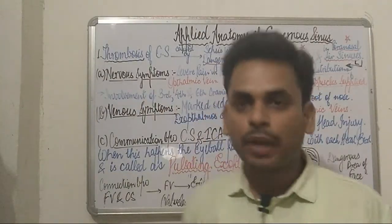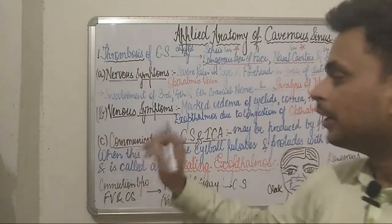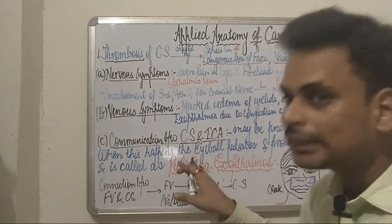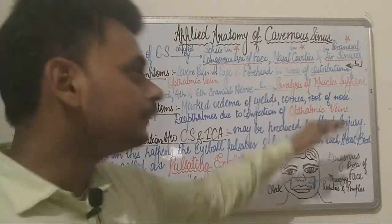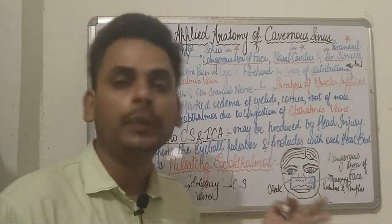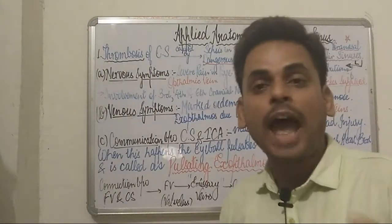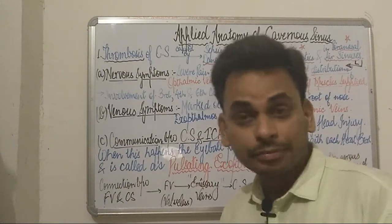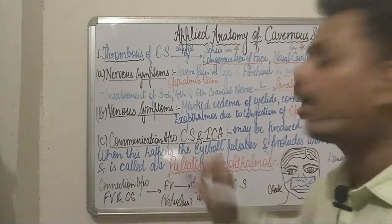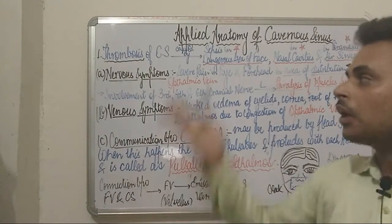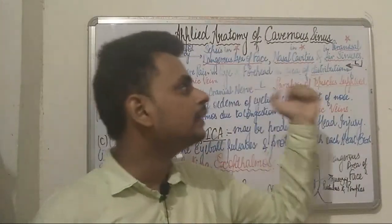Since the boundaries and contents of the cavernous sinus were discussed in the previous video, the third important point is that a communication between the cavernous sinus and the internal carotid artery can also occur due to a head injury. When this happens, the eyeball pulsates and protrudes with each heartbeat — a condition most commonly called pulsating exophthalmos. This is seen in patients with sepsis or infection spread from the dangerous area of the face, nasal cavities, or paranasal sinuses.